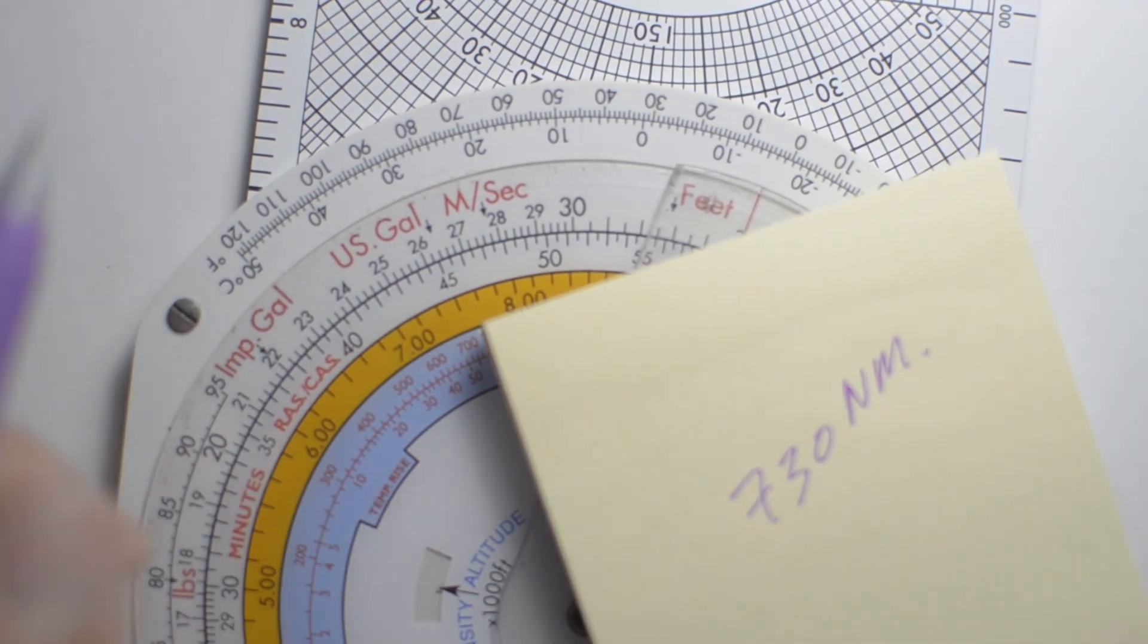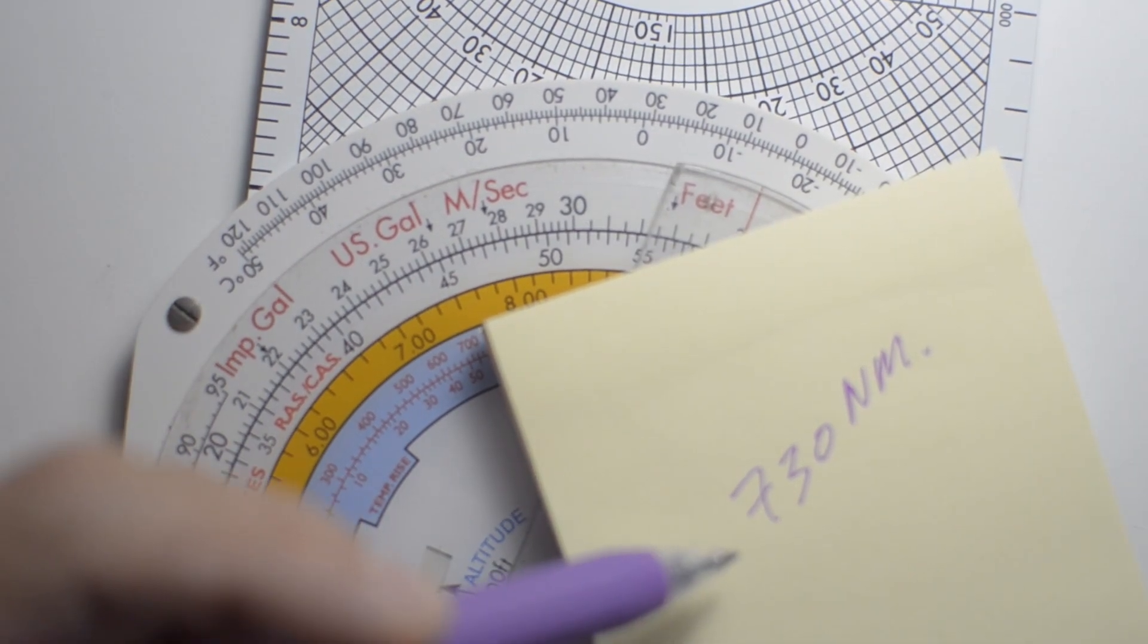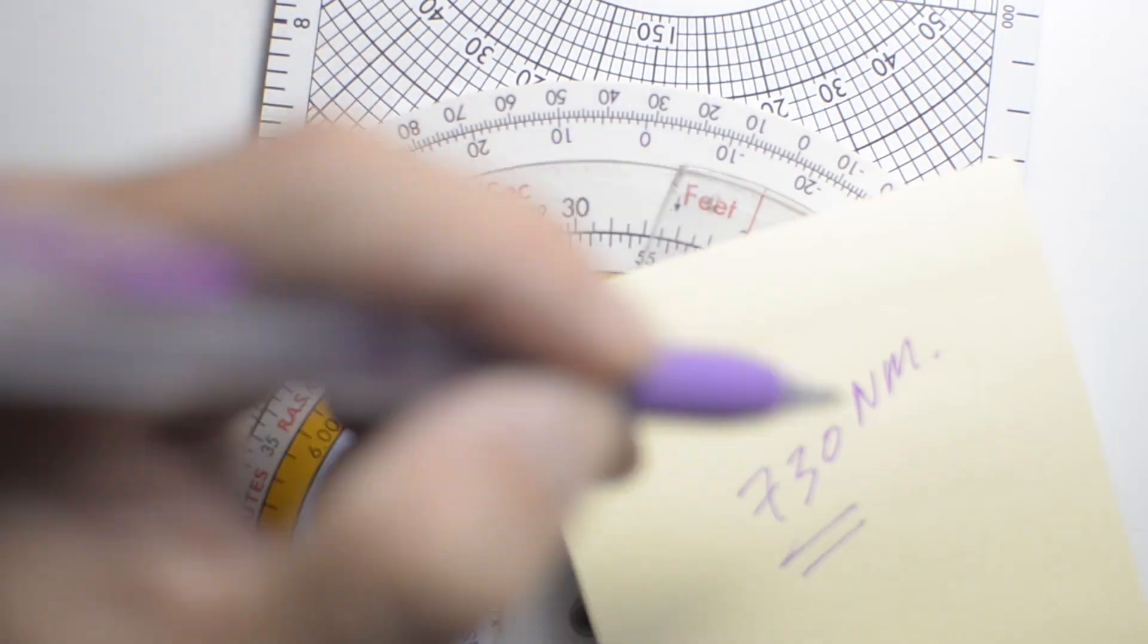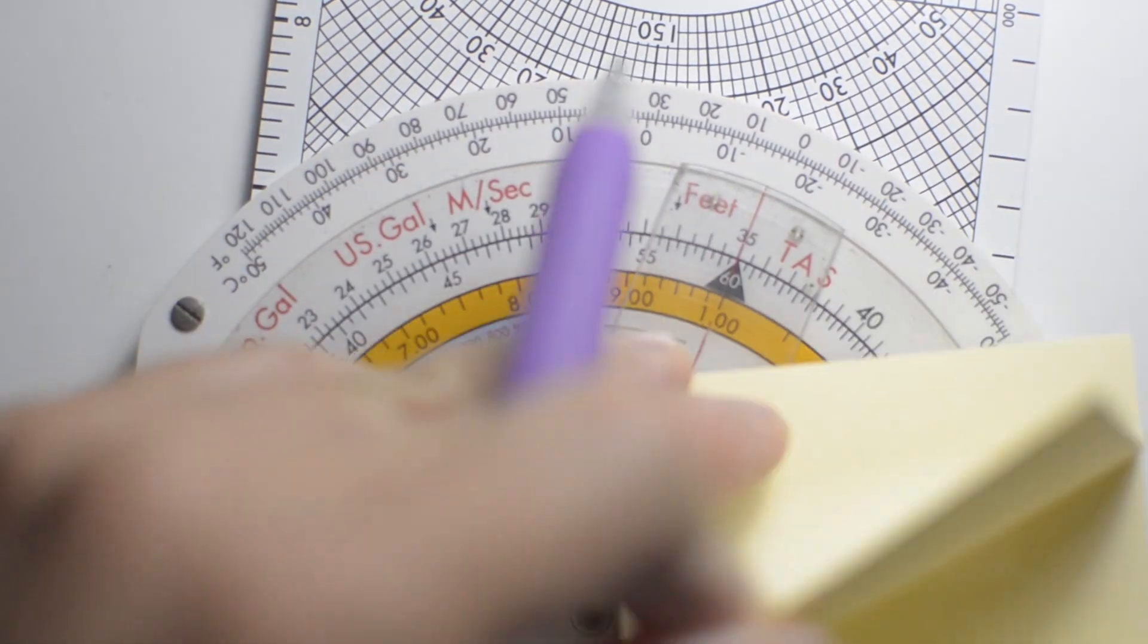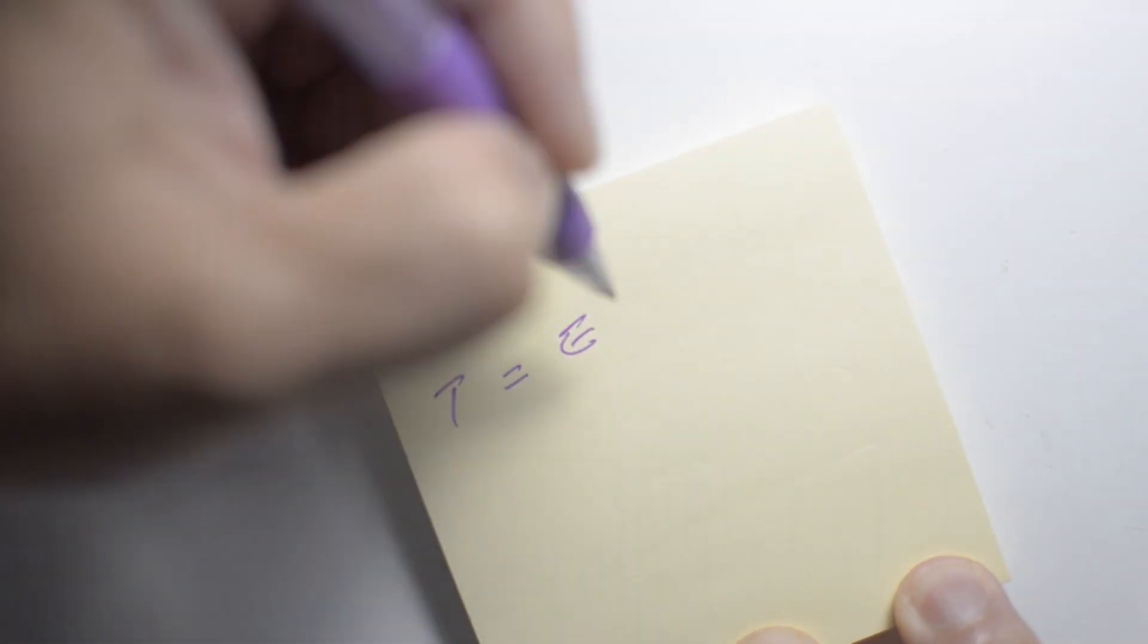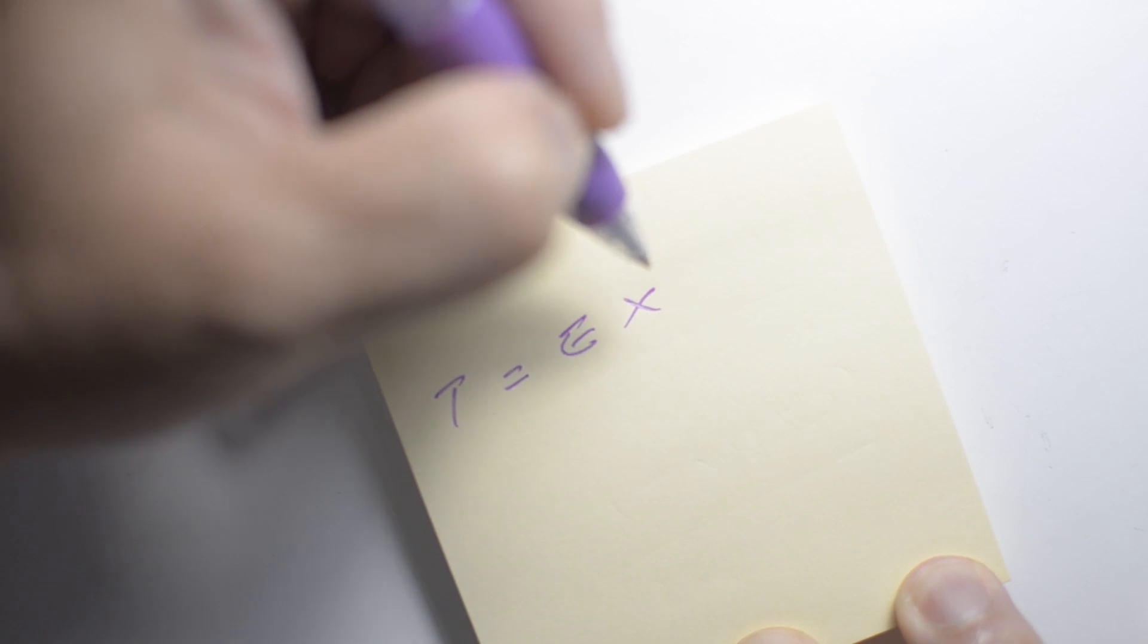So I'm going to put this aside, and I'm going to do the formula manually, and we're going to see if we come up with the same result. And we're going to do a quick calculation using the formula method, where we know that the time to the point of safe return is equal to the aircraft's safe endurance multiplied by the ground speed home.